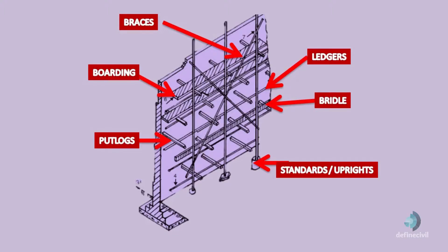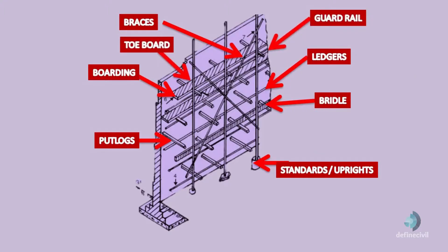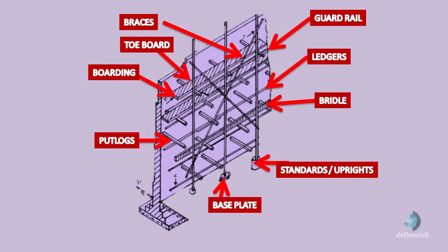6. Bridle — a member used to bridge openings. 7. Boarding — planks on which workmen stand. 8. Guard rail — a rail provided at about 1 meter level to guard the men working on the boarding. 9. Toe board — boards placed parallel to the boarding near the wall to give protection to workers. 10. Base plate or sole plate — plates on the ground supporting the standards.